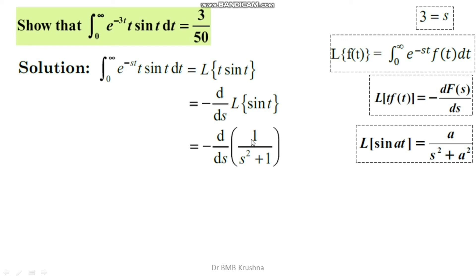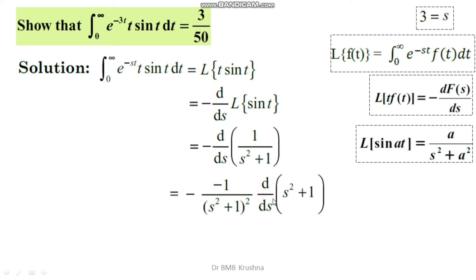Now we compute −(d/ds)[1/(s² + 1)]. The derivative of 1/(s² + 1) with respect to s is −1/(s² + 1)² times the inner derivative d/ds(s² + 1). So we get −1 × (−1/(s² + 1)²) × 2s. Since s² differentiates to 2s and the constant 1 differentiates to 0, the inner derivative is 2s, giving us 2s/(s² + 1)².